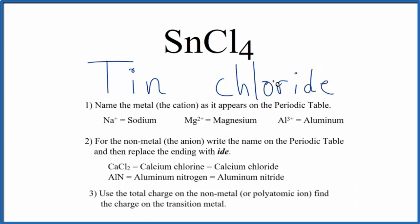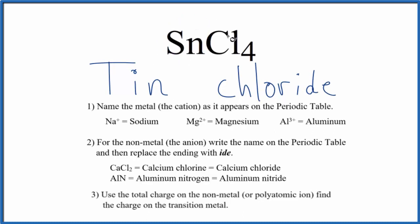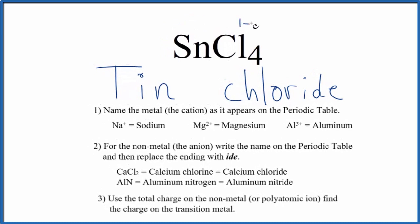So at this point, we have tin chloride, but tin is a transition metal, so we don't know the charge of tin. We have to look at what it's bonded to. So chlorine always has a one minus ionic charge, and there's four of them. So we're going to have to have a four plus for the ionic charge on the tin.